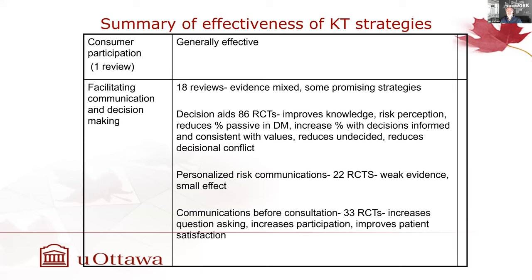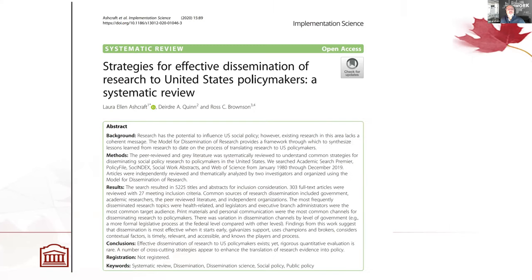Personalized risk communication: 22 randomized control trials, weak evidence and small effects — this is in the health context. As you're looking at the literature, always consider your local context, which may differ from what was in the studies being synthesized. There's also a 2020 paper I like on the effectiveness of dissemination strategies to US policymakers — and I think many of you are producing research that needs to be disseminated to policymakers.